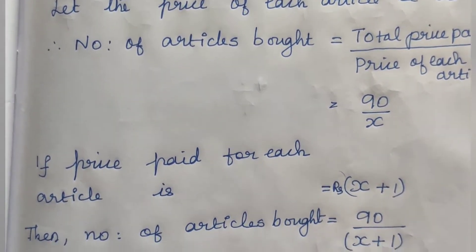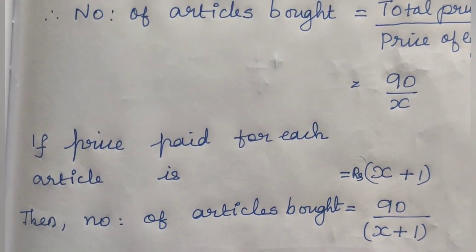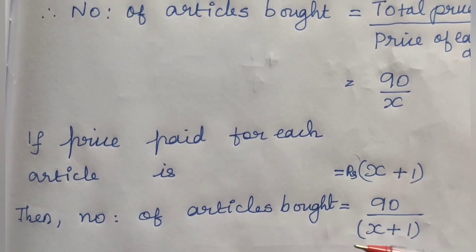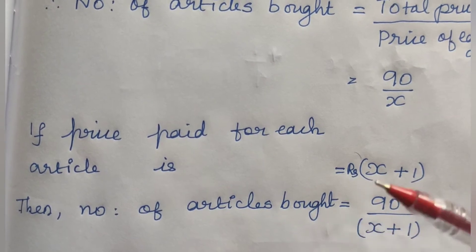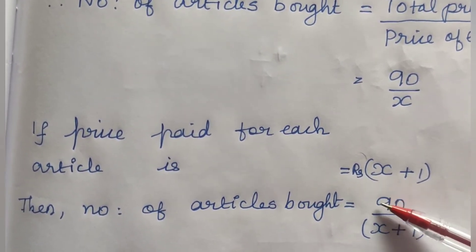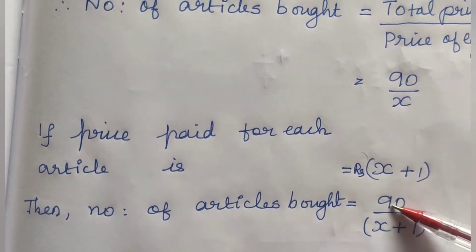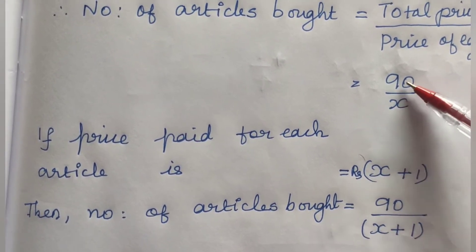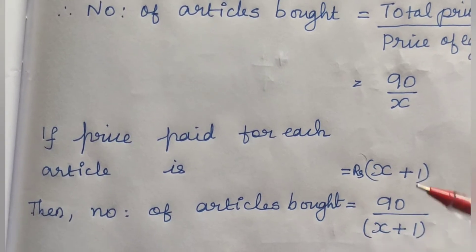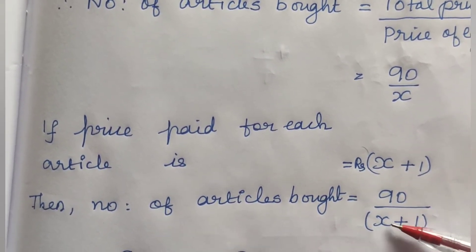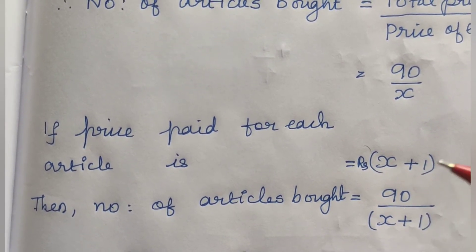Now suppose the price paid for each article is X plus 1, that is 1 rupee more. Earlier he paid X rupees. When the price of each article is X plus 1, the number of articles he buys is 90 divided by X plus 1. When the price increased, the number of articles decreased — he would have got 1 article less.